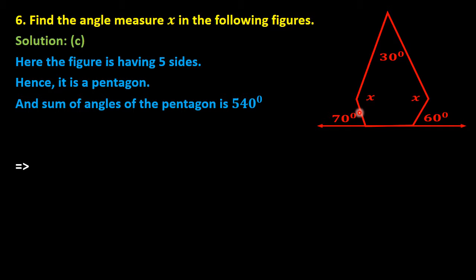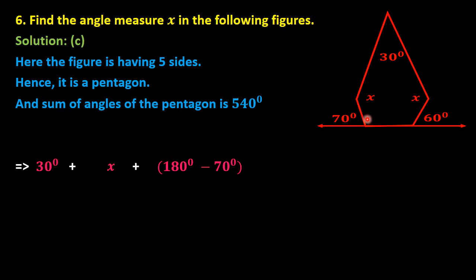Adding the five angles: the first angle is 30 degrees, plus the second angle x, plus the third angle — since only the exterior angle of 70 degrees is given, the interior angle is 180 minus 70 degrees. The fourth angle's exterior is 60 degrees, so the interior angle is 180 minus 60 degrees.